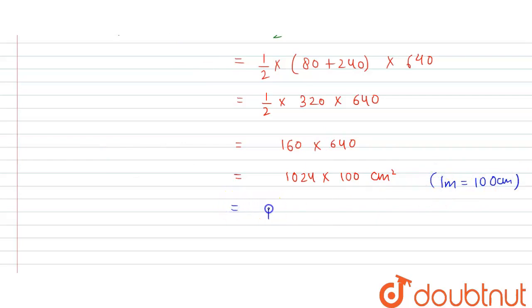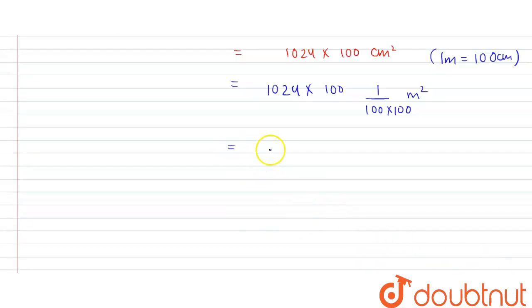So we use this over here. This is equals to 1024 into 100. One centimeter is equals to one by 100 meter, so this is one by 100 multiply by 100 meter square. So this is equals to 1024. So 100 and 100 cancel, and this is divided by 100.